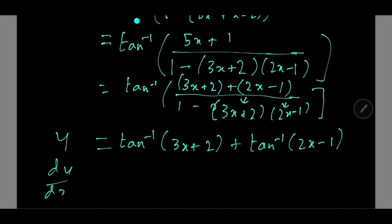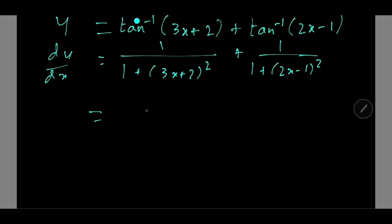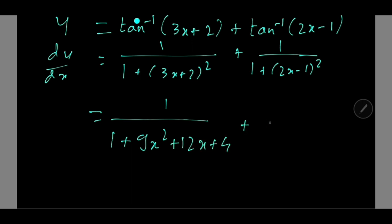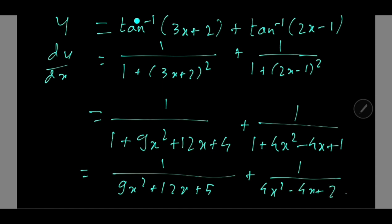Now dy by dx: the derivative of tan inverse x is 1 upon 1 plus x squared. So dy by dx equals 1 upon 1 plus (3x plus 2) squared times 3, plus 1 upon 1 plus (2x minus 1) squared times 2. Expanding: this gives 1 upon 9x squared plus 12x plus 5 plus 1 upon 4x squared minus 4x plus 2. This is the final solution.